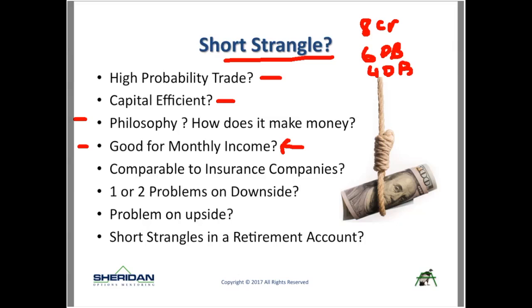Is this good for monthly income? Yes — it can work — but every strategy has pluses and minuses. On the downside you have two enemies: price moving too far down and volatility going up. On the upside it's mostly just price. So when doing short strangles, you have two enemies on the downside and one enemy on the upside.